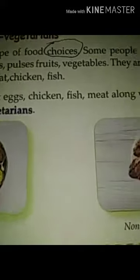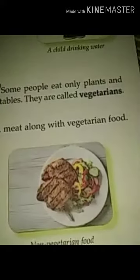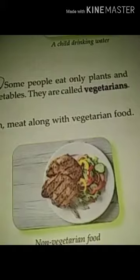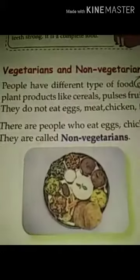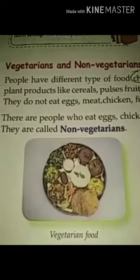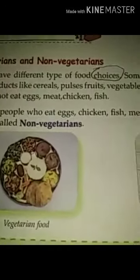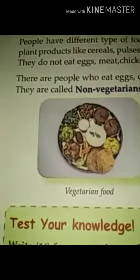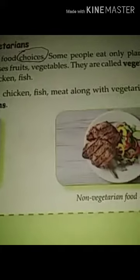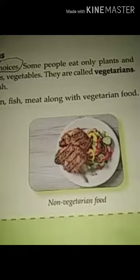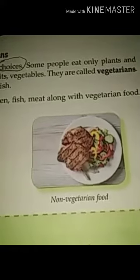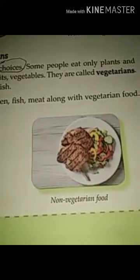Those who eat only plants and plant products are called vegetarians. They do not eat eggs, meat, chicken, or fish. Now there are people who eat eggs, chicken, fish, and meat along with vegetarian food — that means along with vegetables, fruits, wheat, and rice.